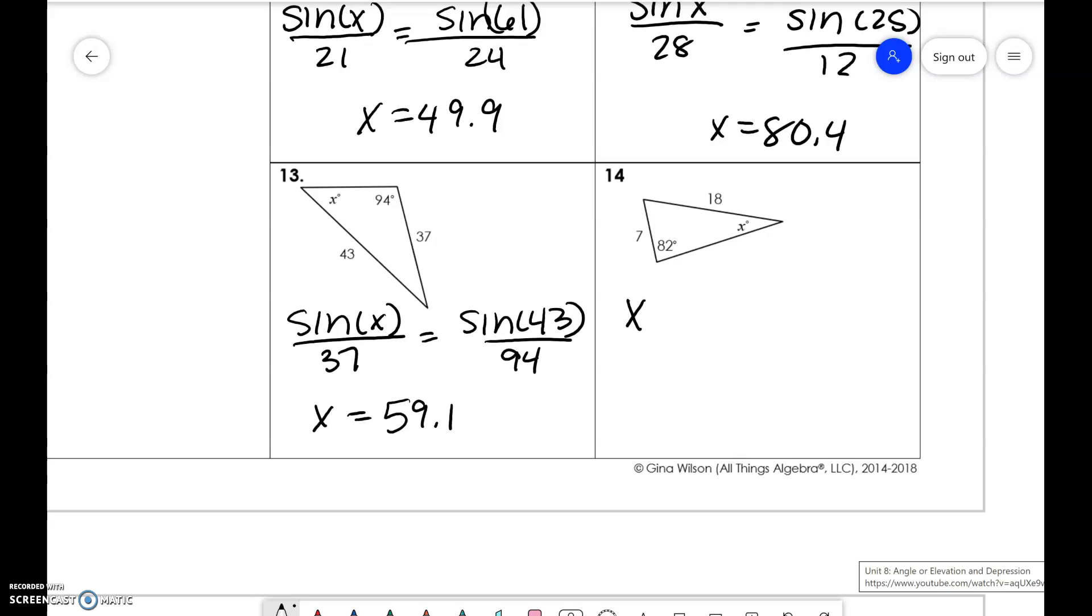And the last one, sine of 82 over 18 is equal to sine of x over 7, you get x to be 22.6.